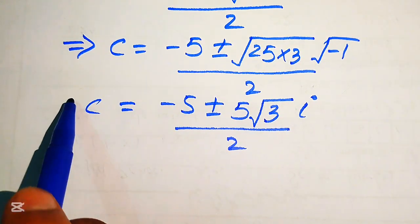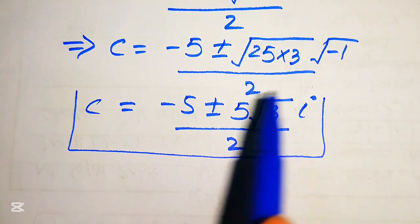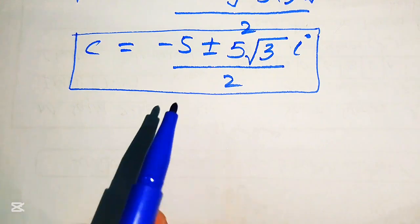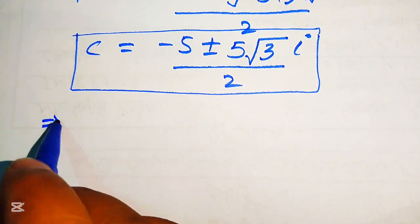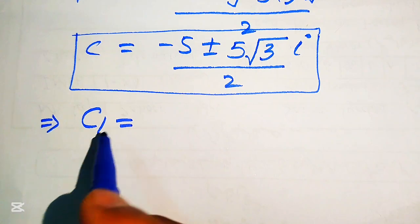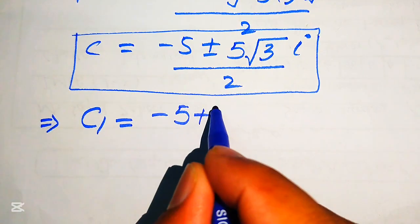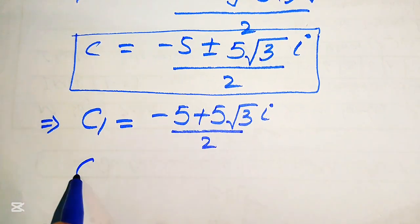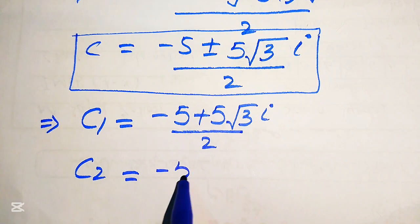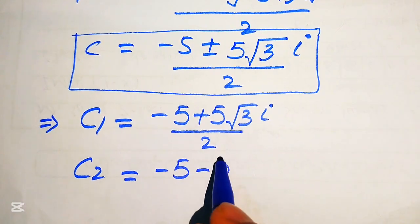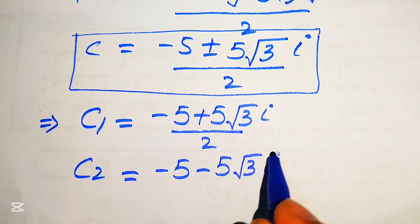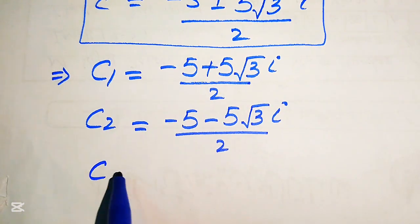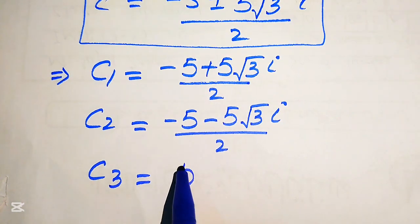These are the two complex roots of the given equation. Finally, the three roots of the given equation are: c1 equals minus 5 plus 5 times square root of 3 times iota, divided by 2; c2 equals minus 5 minus 5 times square root of 3 times iota, divided by 2; and c3 equals 5. These are the three roots of the given equation and this is the final answer.